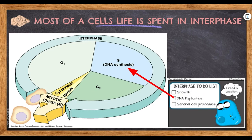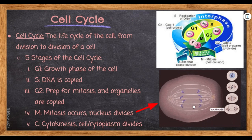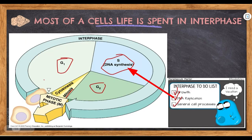Most of the cell's life cycle is spent in interphase, which includes G1, S phase, and G2. In G1 there is growth; in S phase DNA replication happens; in G2 general cell processes continue and the cell continues to grow. Then the cell spends some of its life in mitosis, followed by cytokinesis — when that cell actually splits from one cell into two cells.